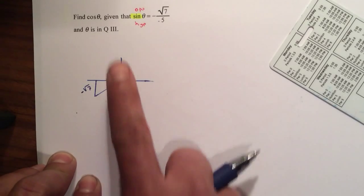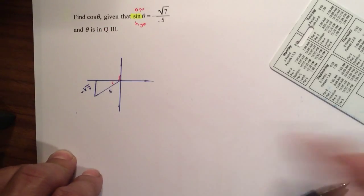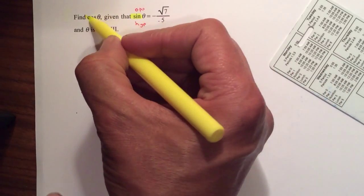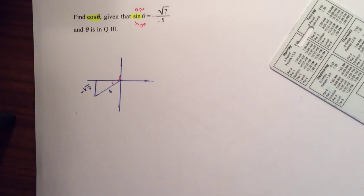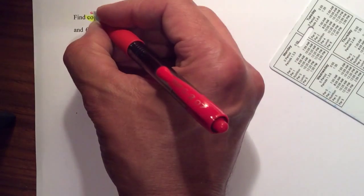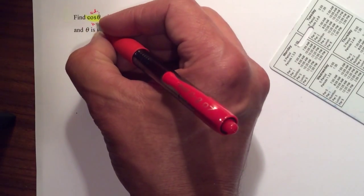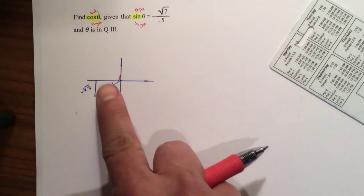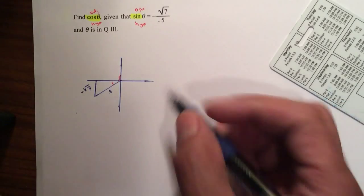And now I need to be able to find the cosine. The cosine is SOHCAHTOA, adjacent over hypotenuse. So therefore I need to be able to find the adjacent. I'm going to use the Pythagorean theorem.